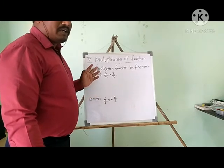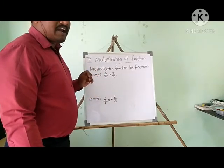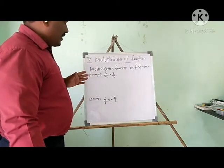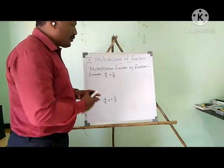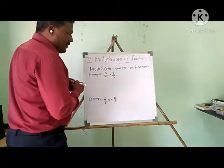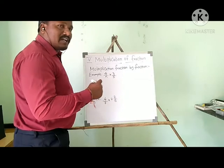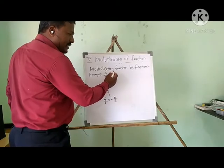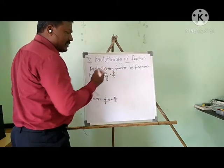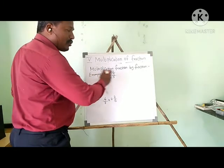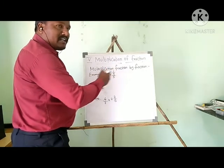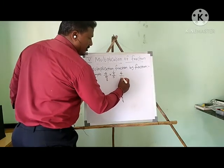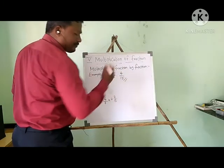We know very well how to multiply a whole number with a fraction. Now we will discuss multiplying a fraction with a fraction. If you take this example, I am going to multiply these two fractions. First we have to simplify, then multiply both fractions. So 1 × 3 = 3, and 3 × 3 = 9. Now I multiply both numerator and denominator: 1 × 4 = 4, and 3 × 5 = 15. So 4/15 is the answer.